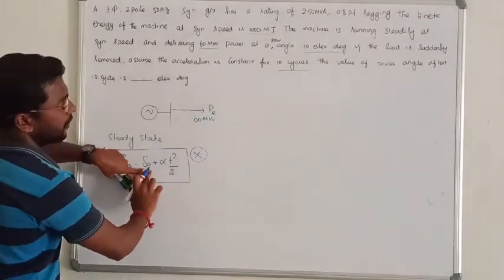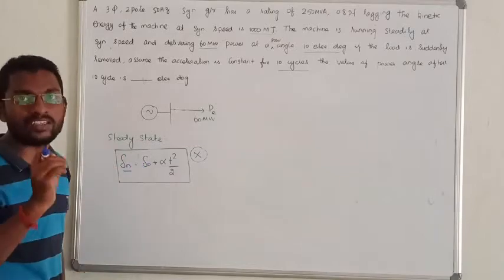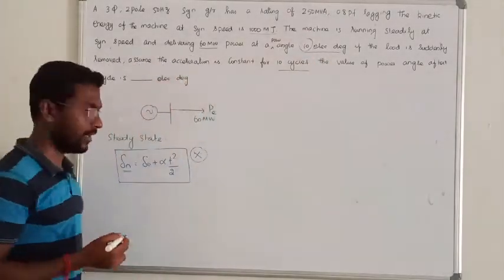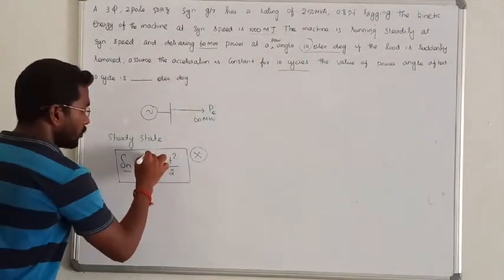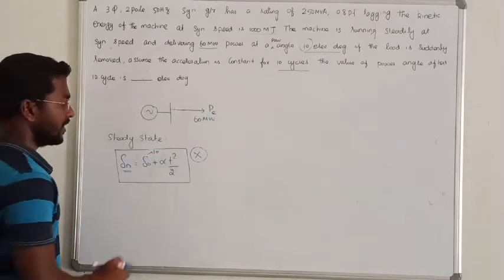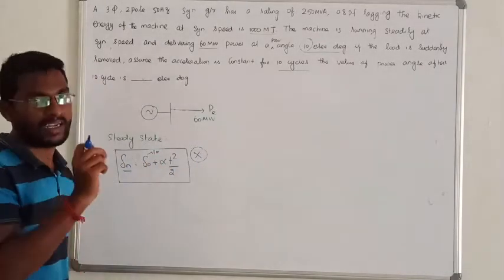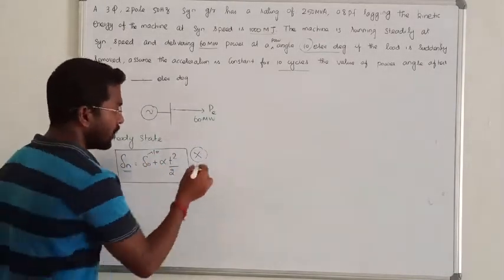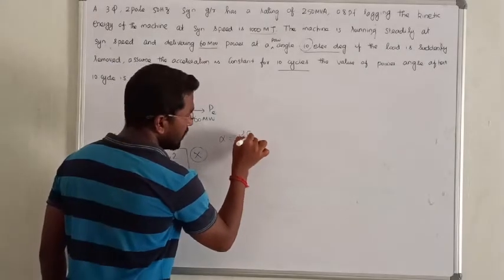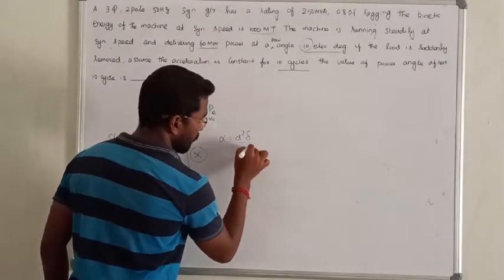δ-naught is the initial load angle, and that is 10 electrical degrees. So the value of δ-naught is given. Next, alpha is the acceleration, and alpha is equal to d²δ/dt².